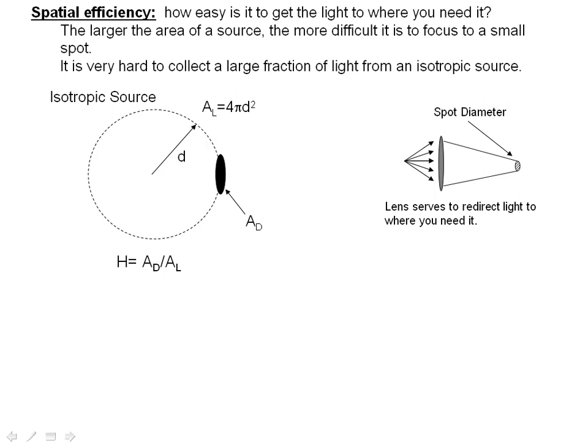Another type of efficiency that we're interested in is spatial efficiency. This just means how easy is it to get the light to where you need it. Ideally, you would want a point source and be able to get all of the light from that point onto another point to excite a very high intensity of the thing you're looking for. Unfortunately, light bulbs, incandescent sources, are isotropic, which means if we have a light bulb filament here, it's going to put out light in all directions. We can't really tell the light bulb to only put out light in one direction unless we use a lens or reflector or something.